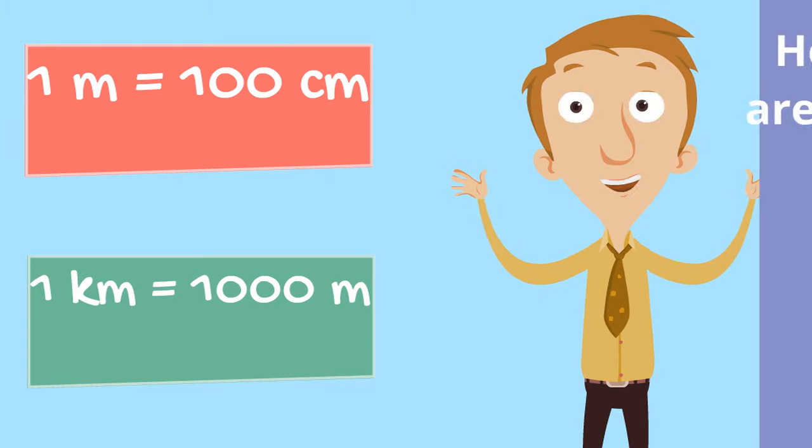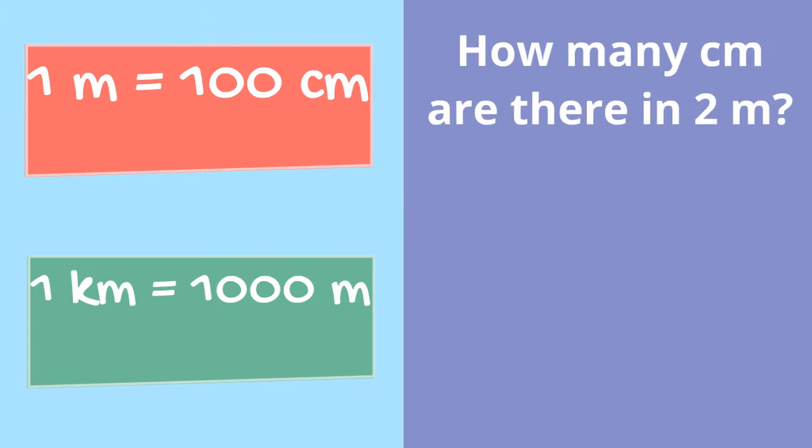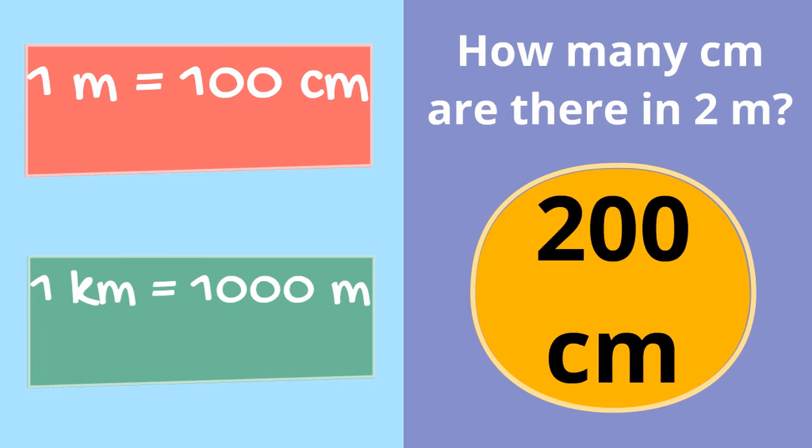If you know those facts, how many centimetres would there be in two metres? Pause the video and see if you can figure out the answer. Well, if there is one hundred centimetres in one metre, then there must be two hundred in two metres. So the answer is two hundred centimetres.